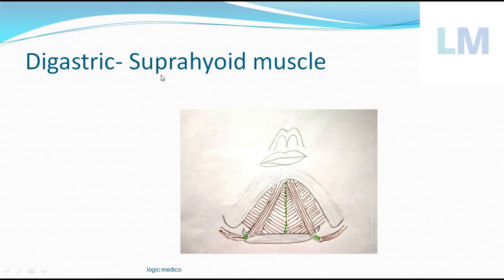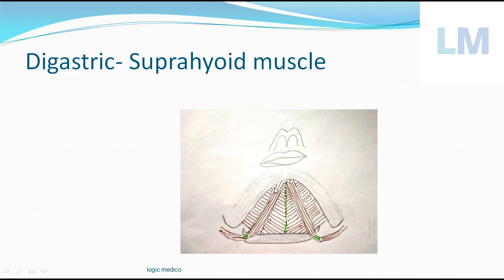What are suprahyoid muscles? Supra means superior — this muscle is above the hyoid bone, therefore it is called a suprahyoid muscle. The other muscles in the suprahyoid group include: stylohyoid, mylohyoid, geniohyoid, and hyoglossus. All these are suprahyoid group of muscles.